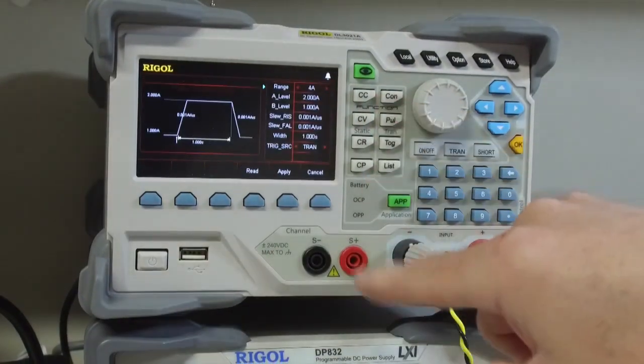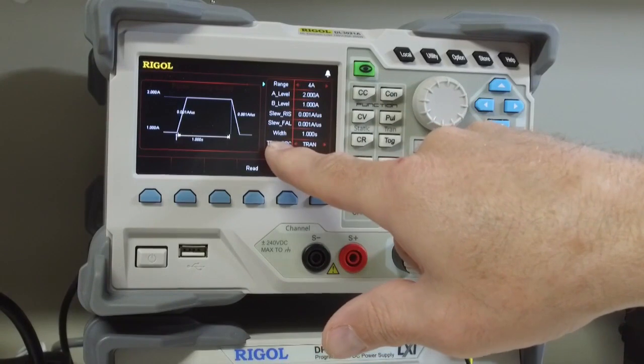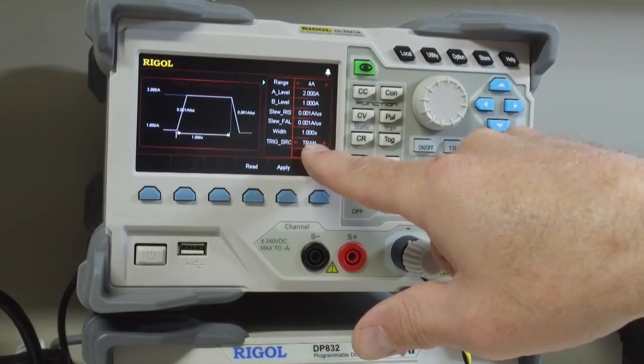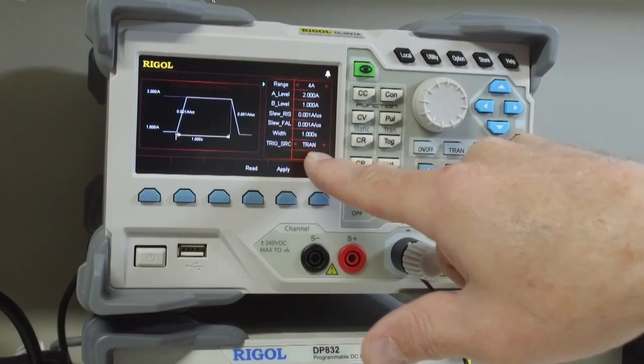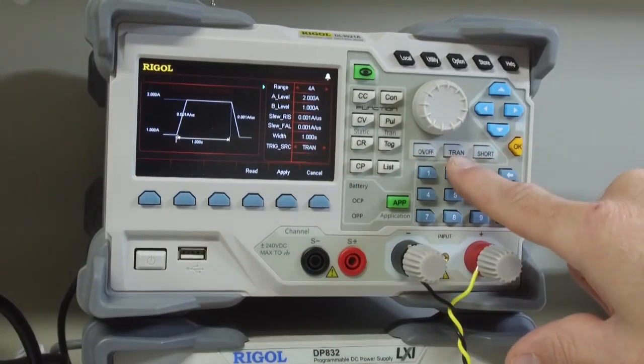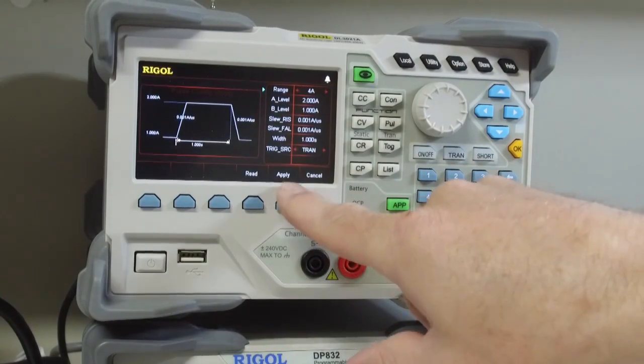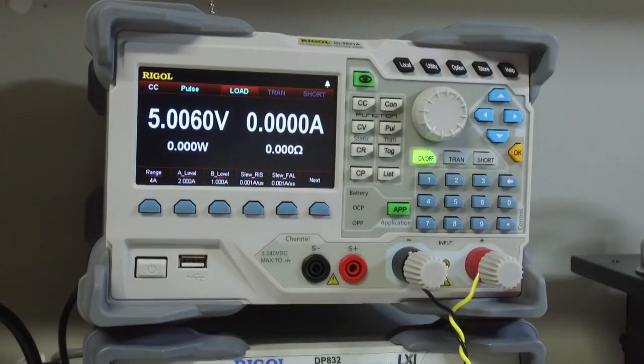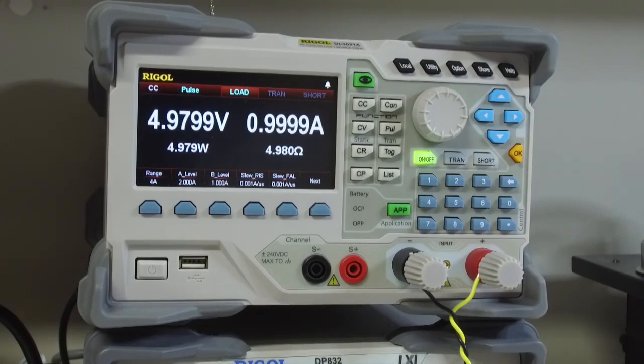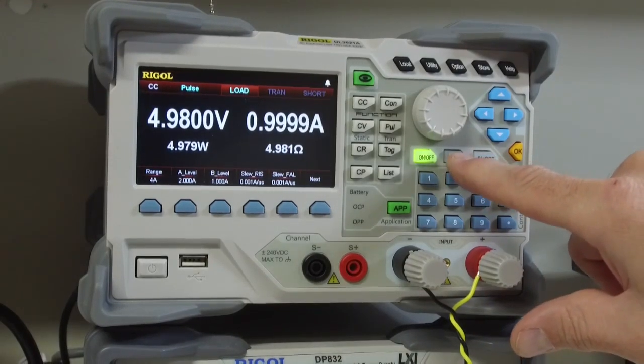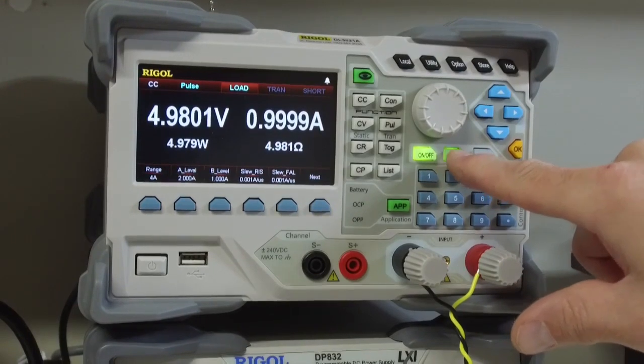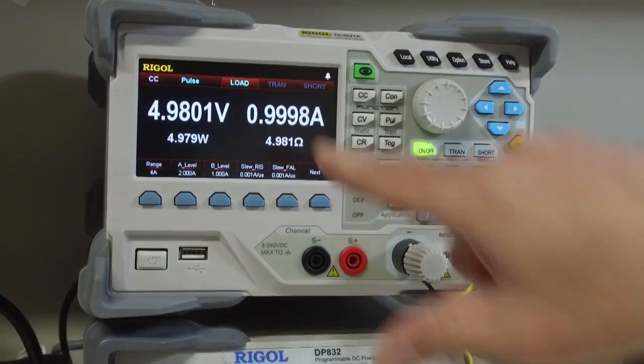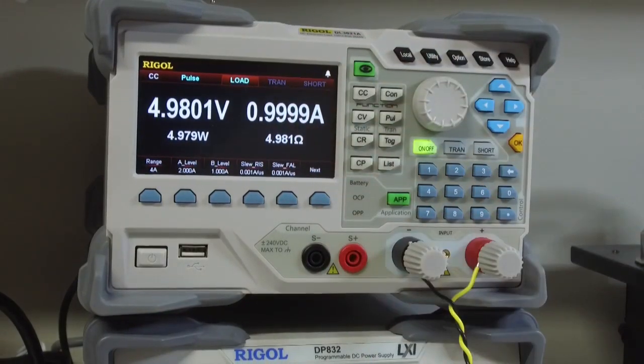Let me show one more thing. This is the trigger source. And there's a couple of different options. Transient is associated with this button here. So I'll hit apply. And what this will do is I'll turn on my load. And when I hit transient, it will apply that one second pulse. And we saw this go up and then come back down for one second.